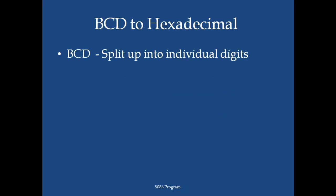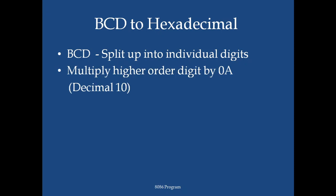First we will see the logic. Given a BCD number, we need to split it up into individual digits. After splitting the digits, the higher order digit will be multiplied by 0A, and that result should be added with the lower order digit to get the hexadecimal equivalent.